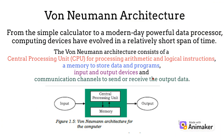From the simple calculator to a modern-day powerful data processor, computing devices have evolved in a relatively short span of time. First, we will talk about the von Neumann architecture, which consists of a central processing unit (CPU) for processing arithmetic and logical instructions, a memory to store data and programs, input-output devices, and communication channels to send or receive the output data. This diagram shows the von Neumann architecture, illustrating the relationship between the input, output, memory, and the CPU.